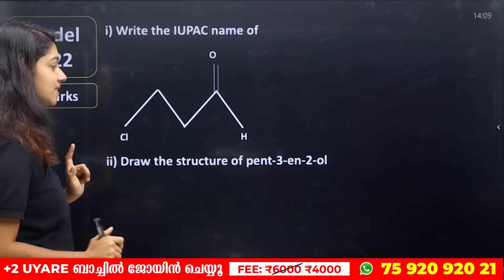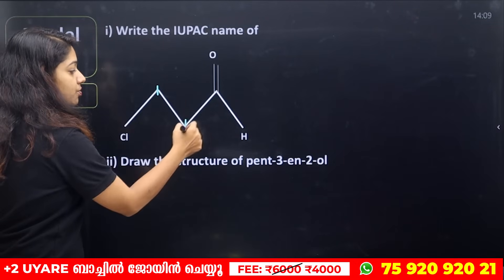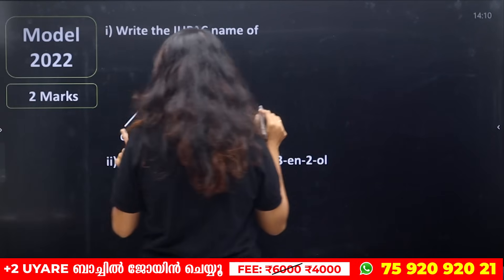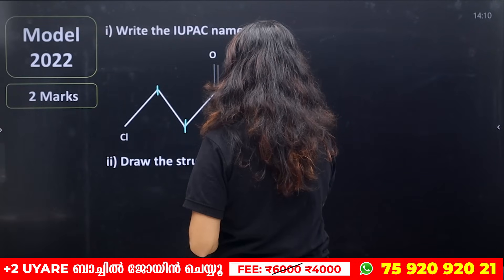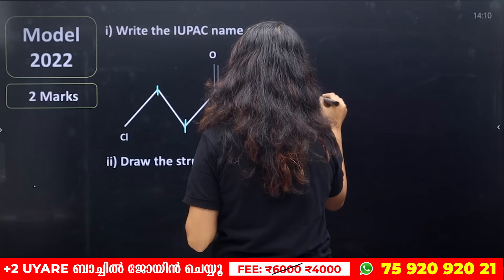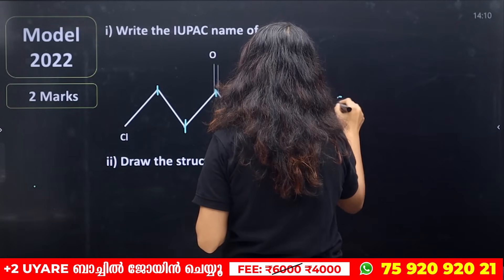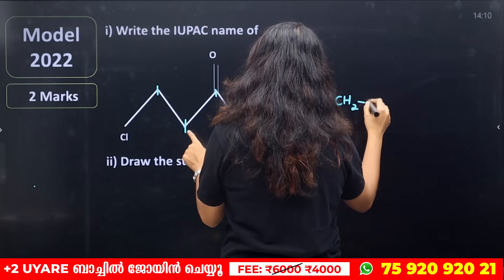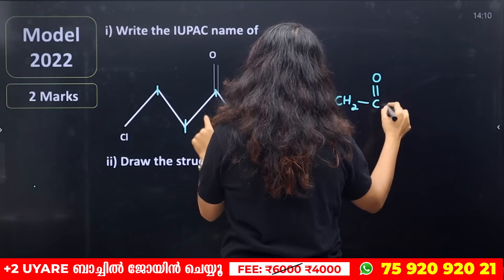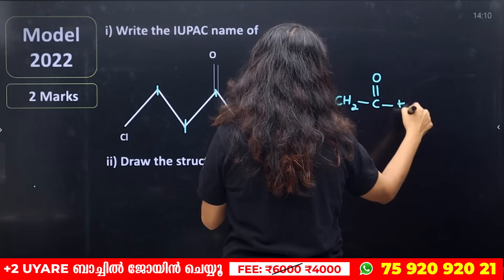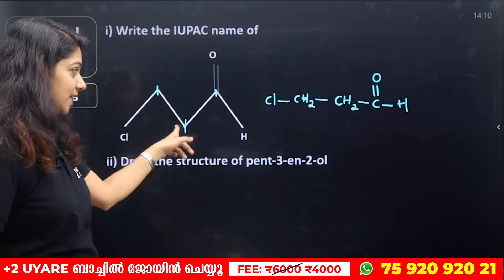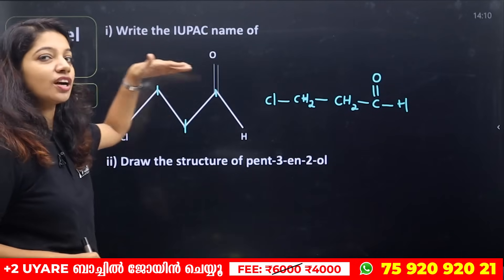Here is a chlorine atom. Here is carbon 1, 2, 3. Here is a hydrogen. I will mark that chlorine. Here is a carbon. There is a CH2, that is a CH2, there is a CH2, there is a CH2. There is a double bond. There is a carbon. There is hydrogen. This is an organic molecule.